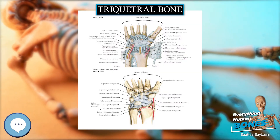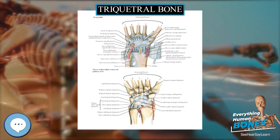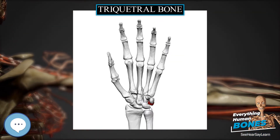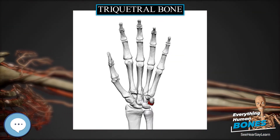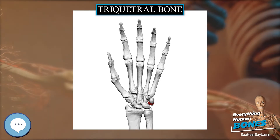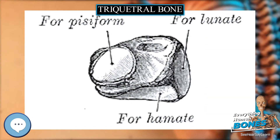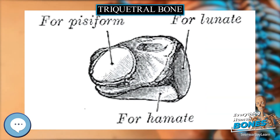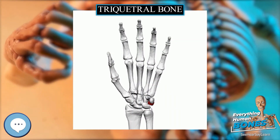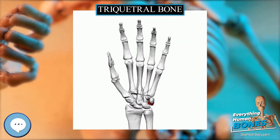Surfaces: The inferior surface presents a medial, rough, non-articular portion, and a lateral convex articular portion which articulates with the triangular articular disc of the wrist. The superior surface, directed lateralward, is concave, sinuously curved, and smooth for articulation with the hamate.